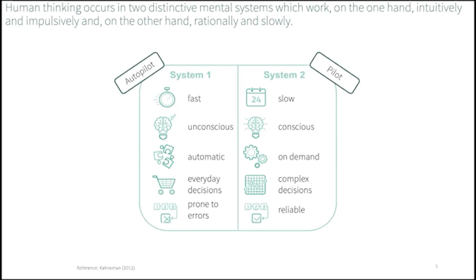Typically, System 1 is in charge of unconscious everyday actions and decisions, and utilizes heuristics — simple rules of thumb or mental shortcuts — to arrive at decisions quickly and effortlessly. Generally this works quite well, but sometimes using such heuristics will generate systematic errors, or so-called cognitive biases. If System 1 is overcharged with a decision, System 2 takes over, or we may deliberately activate it. System 2 is reliable in solving complex decision problems, but it is also quite fatiguing to use.